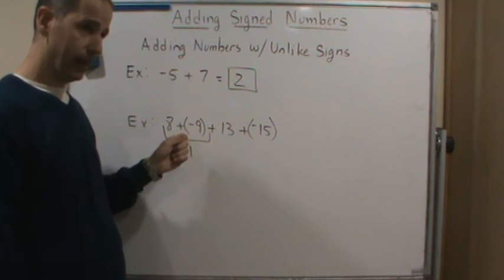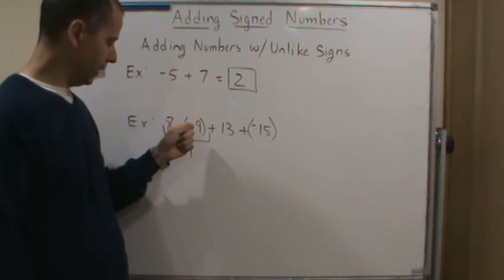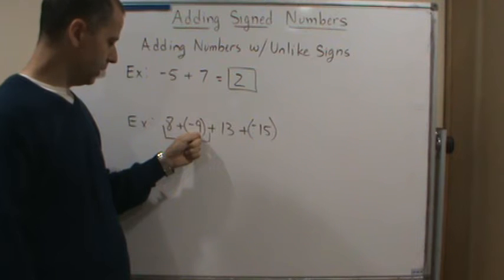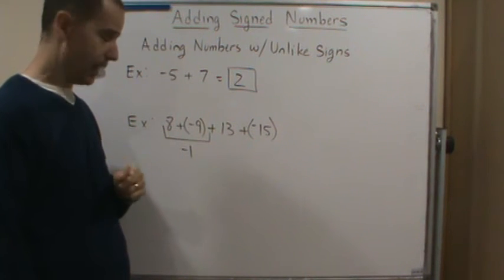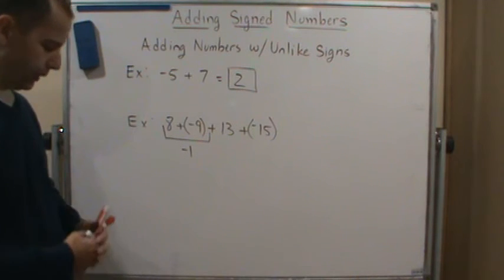So I think I misspoke earlier. So I'm correcting myself. Is that I think what I said, again, I don't know why I said this, but I think what I said was not absolute value. But that's not true. So here we get negative 1.